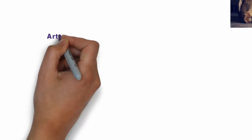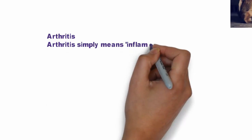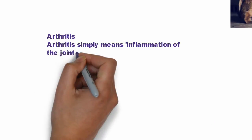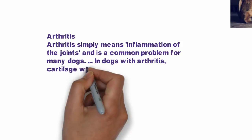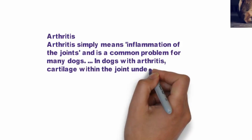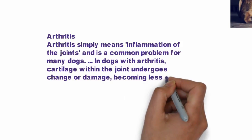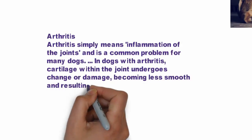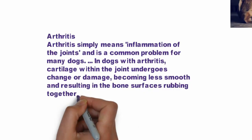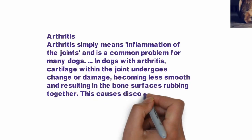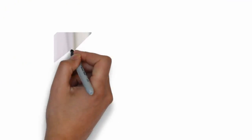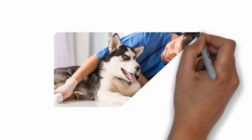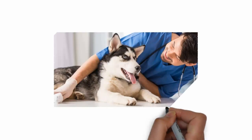9. Arthritis. Arthritis simply means inflammation of the joints and is a common problem for many dogs. In dogs with arthritis, cartilage within the joint undergoes change or damage, becoming less smooth and resulting in the bone surfaces rubbing together. This causes discomfort to your dog as well as further damage to the cartilage.